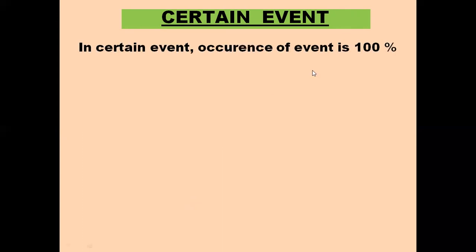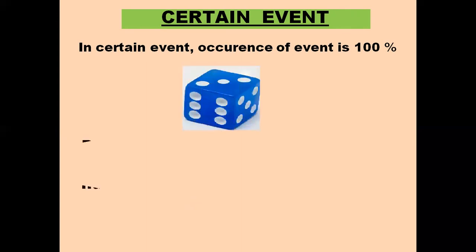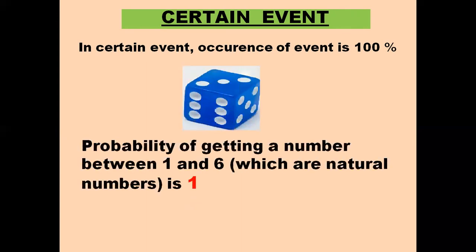Now we come to a certain event. In a certain event, the occurrence of the event is 100 percent. When a die is rolled, the probability of getting a number between one and six — which are natural numbers: one, two, three, four, five, six — is one. Because we will definitely get a number between one and six when a die is rolled. Either we will get one, two, three, four, five, or six. So probability is one.